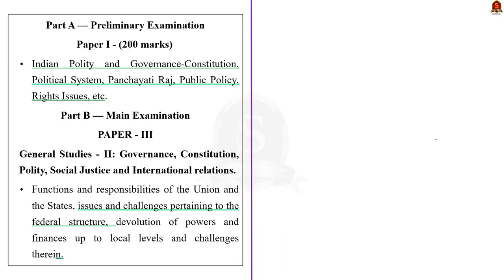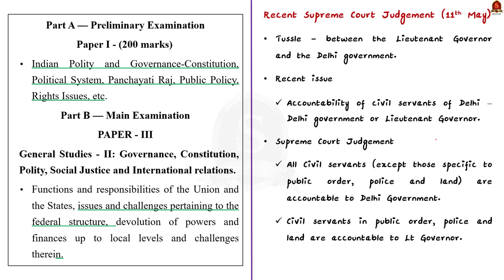It is in this context that this text and context article is written. This article focuses on the rationale behind the Supreme Court's May 11th judgment, the 19th of May ordinance passed by the President, the conflict between the ordinance and the Supreme Court judgment, and finally the failure of the judgment. The syllabus regarding this discussion is highlighted here. You can go through it.